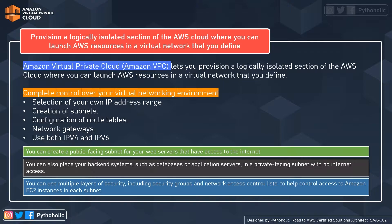AWS, in the form of VPC, is going to provide you an isolated environment to securely host your applications and services. Amazon VPC lets you provision a logically isolated section of the AWS cloud where you can launch AWS resources in a virtual network that you define. Here we are going to define the VPC and AWS is going to provide us with the resources. Let's see what configurable features we get.